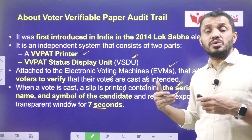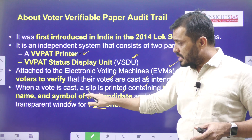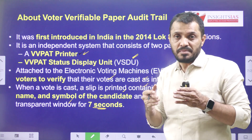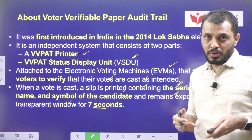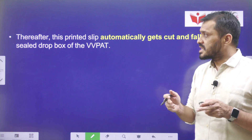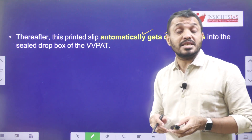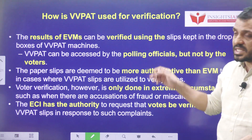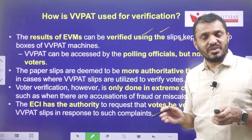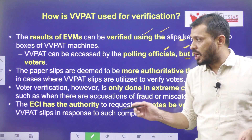This petition also asks to improve the transparency of the glass and to increase the display duration beyond 7 seconds so that voters can see more easily. Once after the 7 seconds, the slip automatically gets cut and falls into the sealed drop box of the VVPAT, which can be accessed only by electoral staff. The results of the EVM are generally verified using the slips that can be tallied, but all VVPAT votes will not be counted. VVPAT boxes can be accessed only through polling officials, not by the voters.